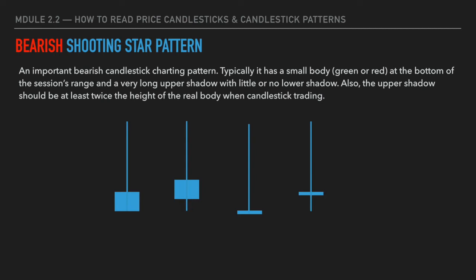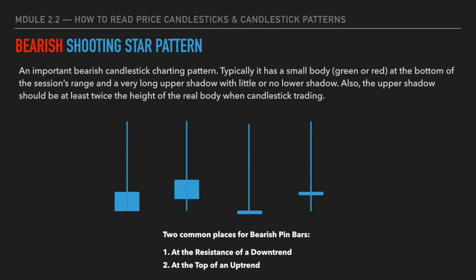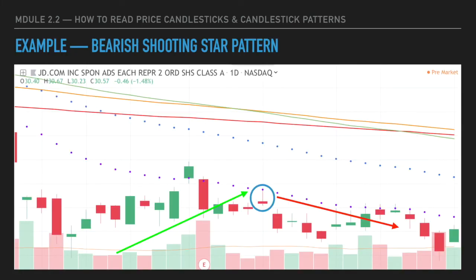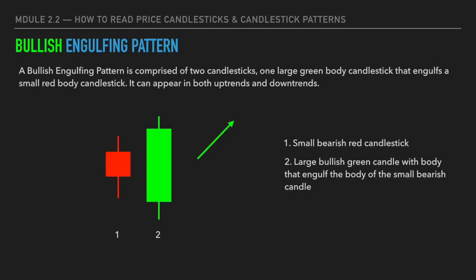Both signs are bearish and indicate the price has a higher probability of going lower in the future. The two common places where bearish shooting star patterns work best are: first, at a resistance level of a downtrend; and second, at the top of an uptrend. Here's an example — the market is in a clear downtrend, with the 20-day moving average acting as a strong resistance level. When the price pulls back to test the resistance and forms a bearish shooting star pattern, the price immediately bounces back and continues heading lower.